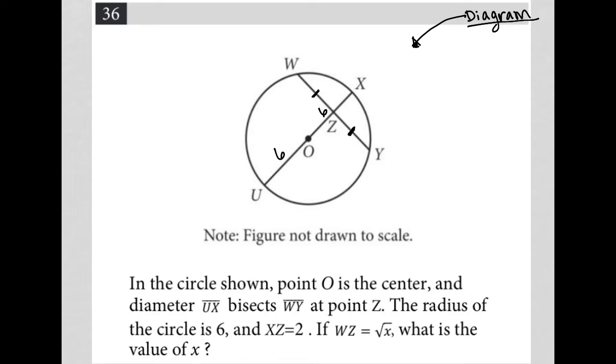But you know what? I'm going to draw in something else here. I'm going to draw in O to Y, because that's also a radius, and that would be 6. And I'm going to draw in O to W. That's also 6.